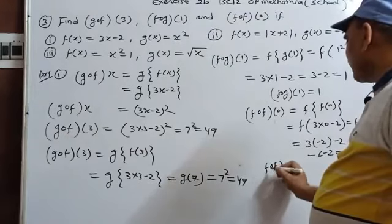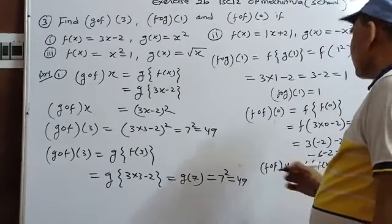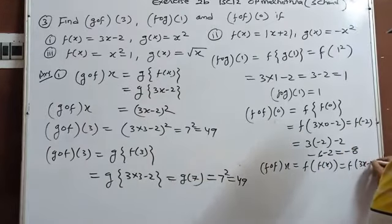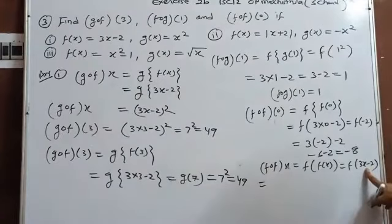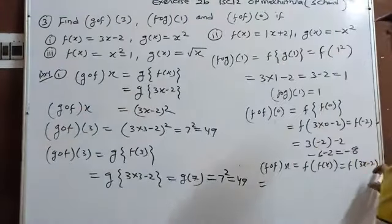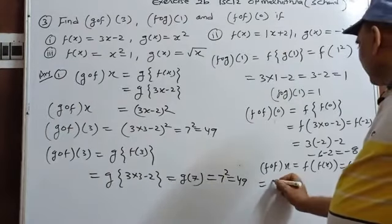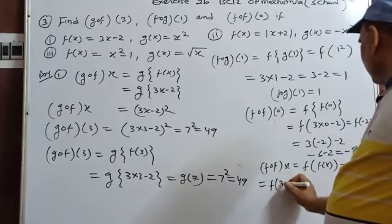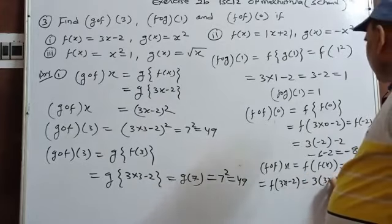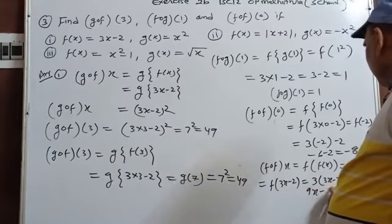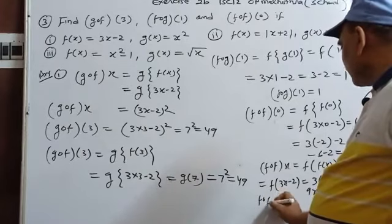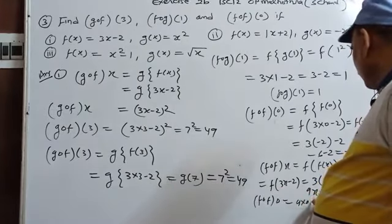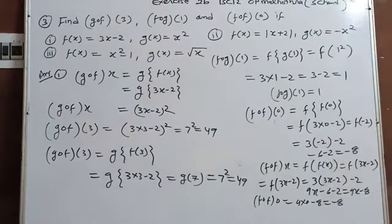We can also find fog(x) first: fog(x)=f(f(x))=f(3x-2)=3(3x-2)-2=9x-6-2=9x-8. Then fog(0)=9×0-8=-8. Same answer.